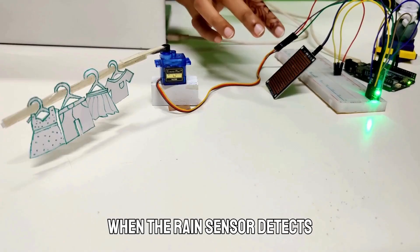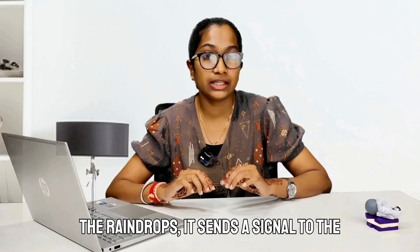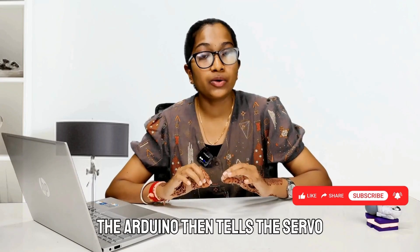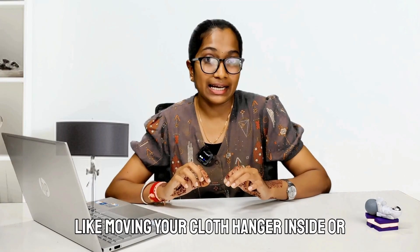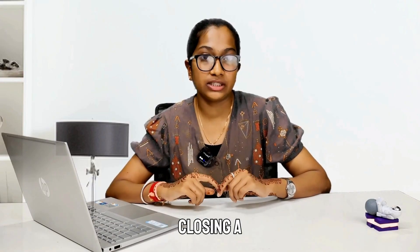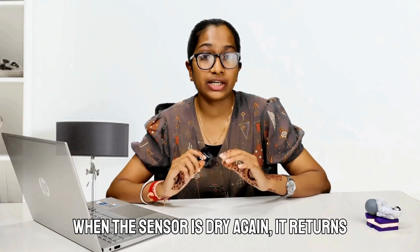Here's how it works. When the rain sensor detects the raindrops, it sends a signal to the Arduino. The Arduino then tells the servo to rotate, simulating something like moving your cloth hanger inside or closing a window. When the sensor is dry again, it returns to its original position.